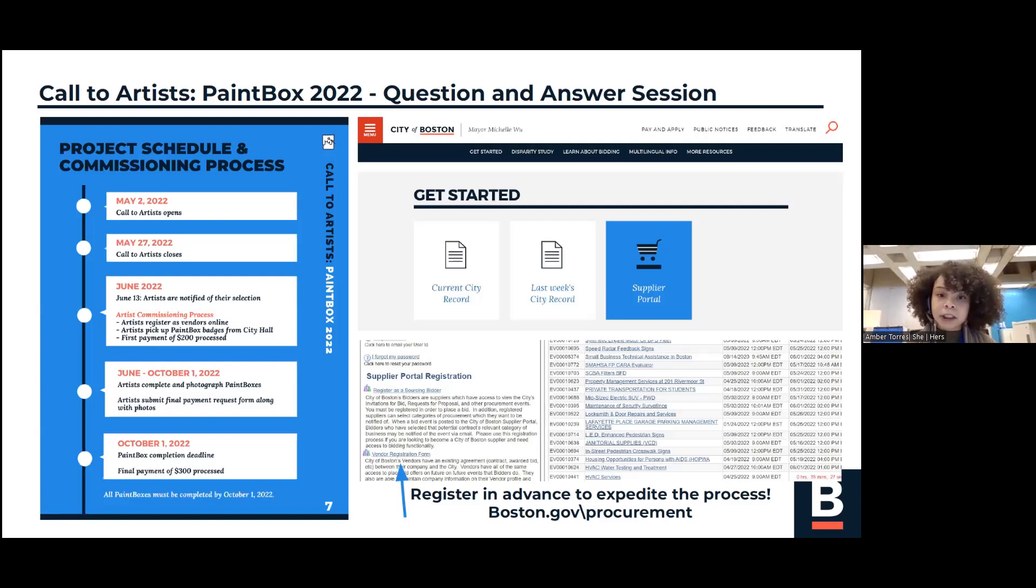On the right here are some screenshots from our website on how to register as a vendor. You'll want to visit boston.gov/procurement. Scroll down to where it says supplier portal. Click on that option, and that'll bring you to a new screen. On the left side of that screen, you're going to select vendor registration form, which is the second option on the bottom there. And that will help you expedite the process. You don't have to wait until you're accepted to register as a vendor with the City of Boston. You can register as soon as tomorrow to expedite the payment process in case you are selected. Once artists have completed the steps above, you can begin painting. All Paintboxes have to be completed by October 1st. Artists will have to submit a photo of the completed box and a payment request form for the final $300.